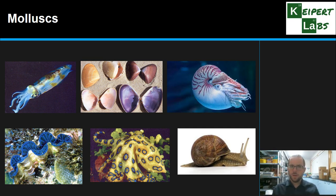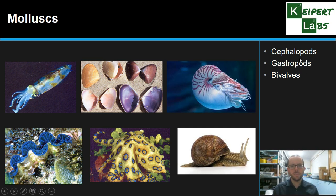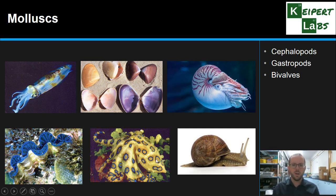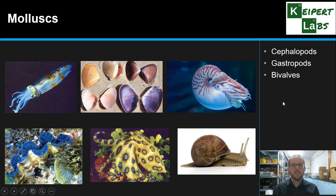Now shifting away from arthropods, we have mollusks, with three main groups. Cephalopods — 'cephalo' is Greek for head, 'pod' is foot — so their head is connected to their legs. Things like squid, octopus, and nautilus are cephalopods. Gastropod means stomach foot, so things like slugs and snails, where their foot structure is connected to their body. And then we have bivalves, like pippies and clams, which have two hard parts of a shell connected together, opening and closing to protect a soft body inside — like a giant clam.